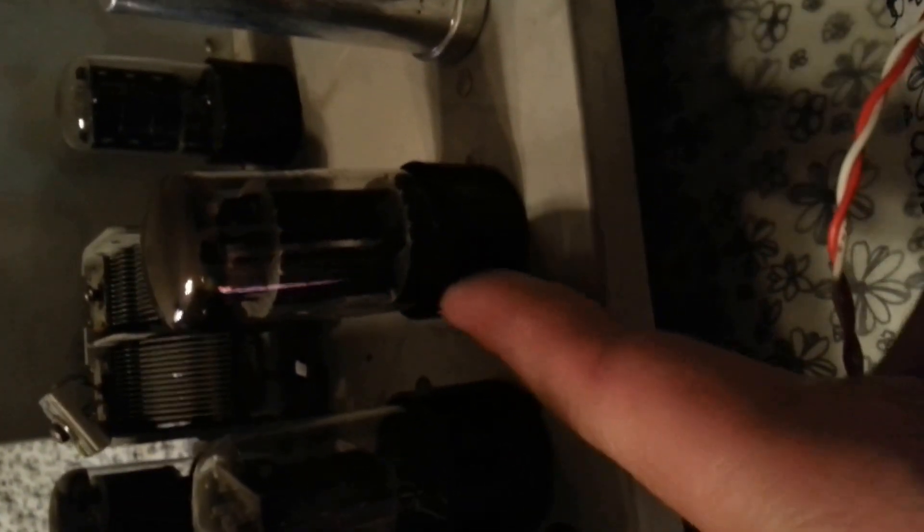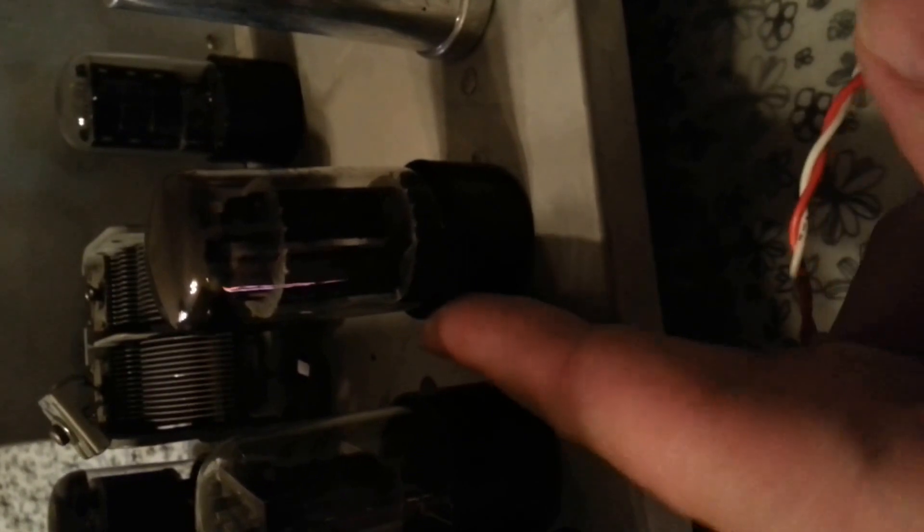This was originally a 6SN7, this is now a 6BK7 which I swapped out for the 6SN7. This is a little more robust and it works very well in this application even though it uses twice the filament current. If I turn it on right here you can see, you watch this thing warm up.